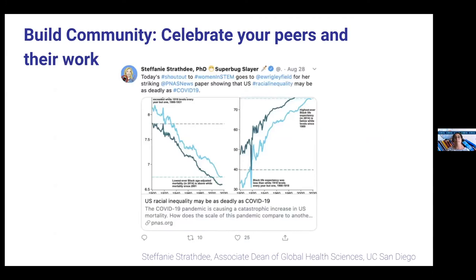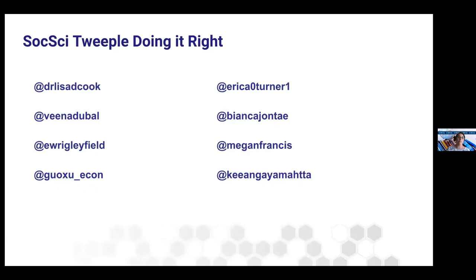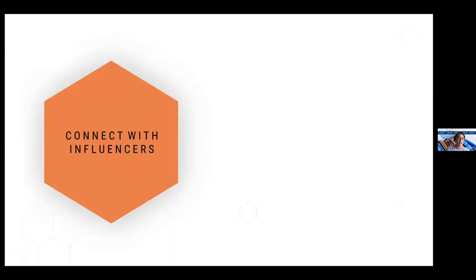Also, building community through celebrating your peers and their work. Here we have Stephanie, Assistant Dean of Global Health Sciences at UC San Diego, doing a shout-out to women in STEM, tagging Ms. Wrigley-Field and others. Even if you don't know these researchers personally, if you want to shout out their work and tag them because you really liked their research or what they were sharing, it's a really great way to build community and make those connections on Twitter. That is a very quick intro on how to use Twitter — I'll pass it over to Andrea to talk about how to connect with influencers.